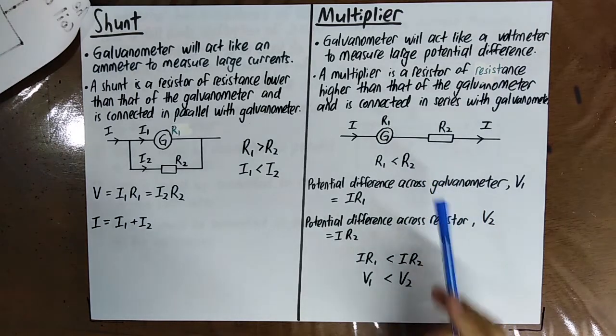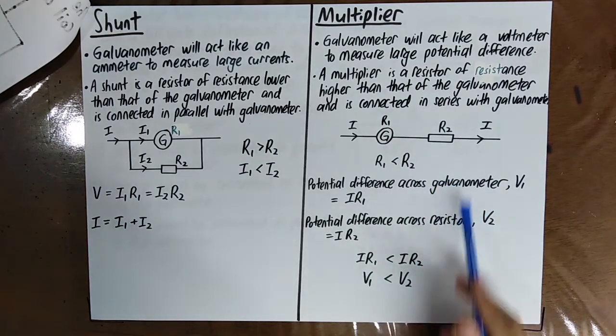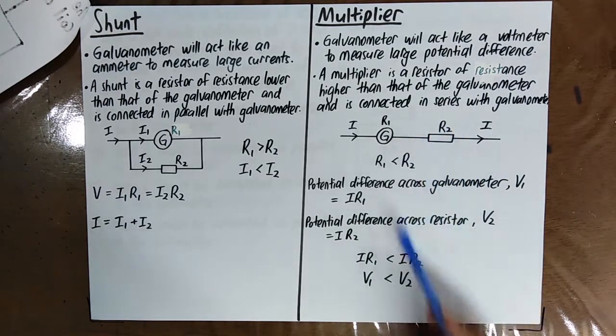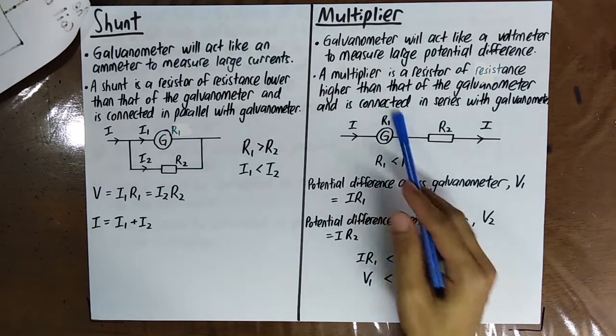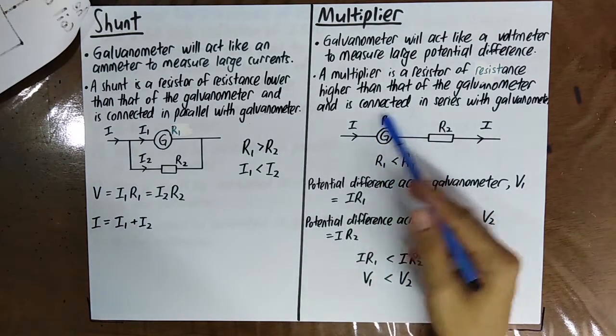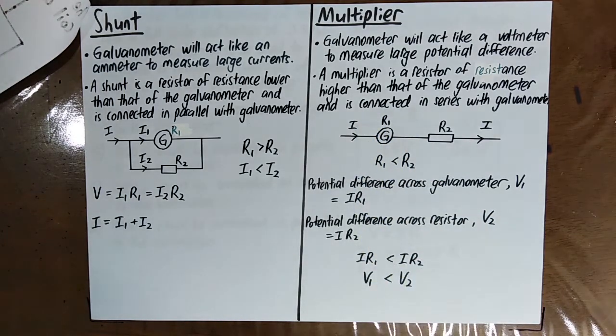Therefore, the potential difference across the multiplier is much larger than the potential difference across the galvanometer.